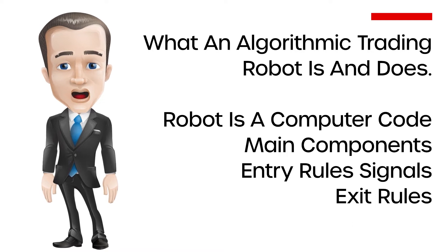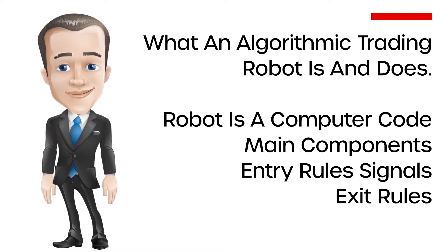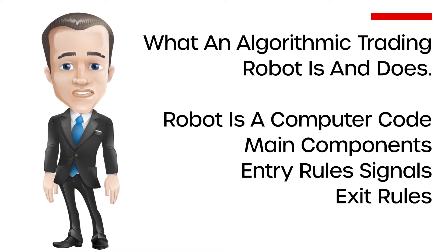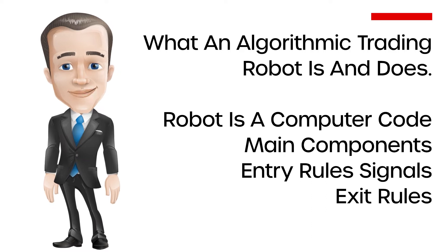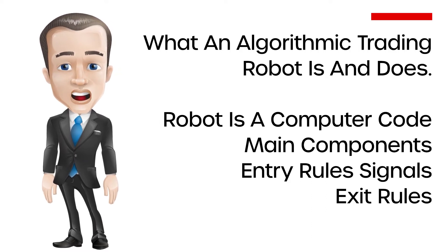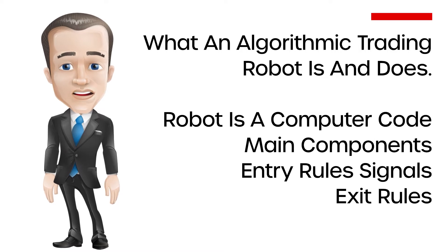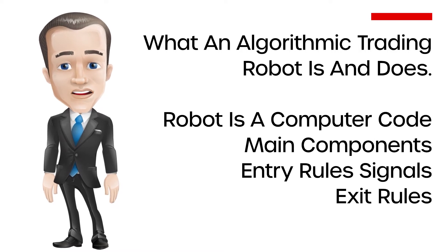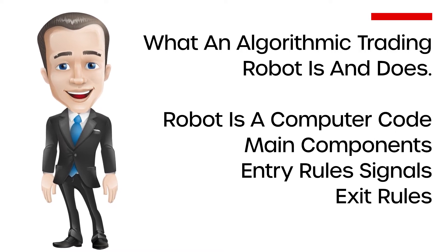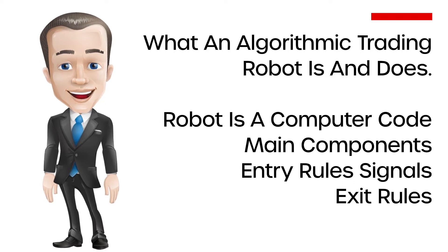What an Algorithmic Trading Robot Is and Does. At the most basic level, an algorithmic trading robot is a computer code that has the ability to generate and execute buy and sell signals in financial markets. The main components of such a robot include entry rules that signal when to buy and sell, exit rules indicating when to close the current positions, and position sizing rules defining the quantities to buy or sell.